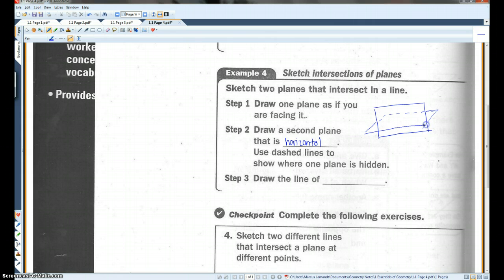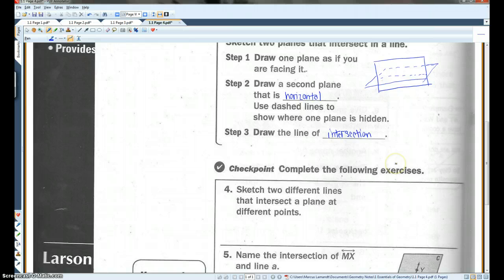Draw the line of intersection. Okay. And then use dashed lines to show where the plane is hidden. Draw the line of intersection. This is a T over here. There we go. And that would be right here. This is totally fine. If it doesn't even look this good, don't even worry about it. Okay.